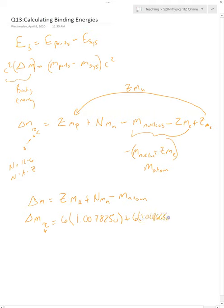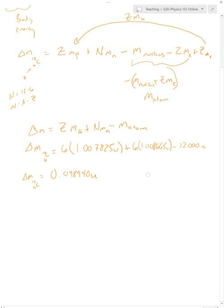Then we subtract the mass of the carbon 12 atom. The carbon 12 atom is defined as having 12 mass units—in fact, this is how mass units are defined, in terms of carbon 12. If we actually do that calculation out, we get that this mass deficit of carbon 12 is 0.098940 units.